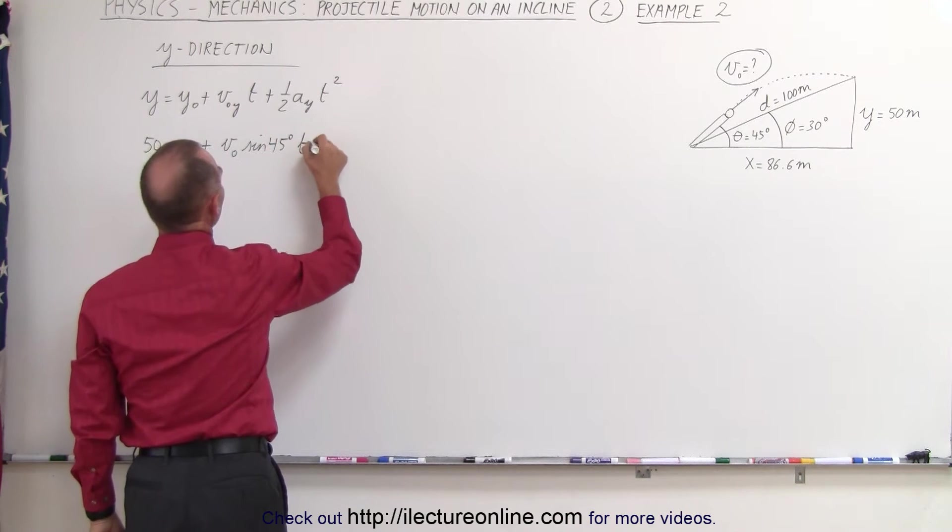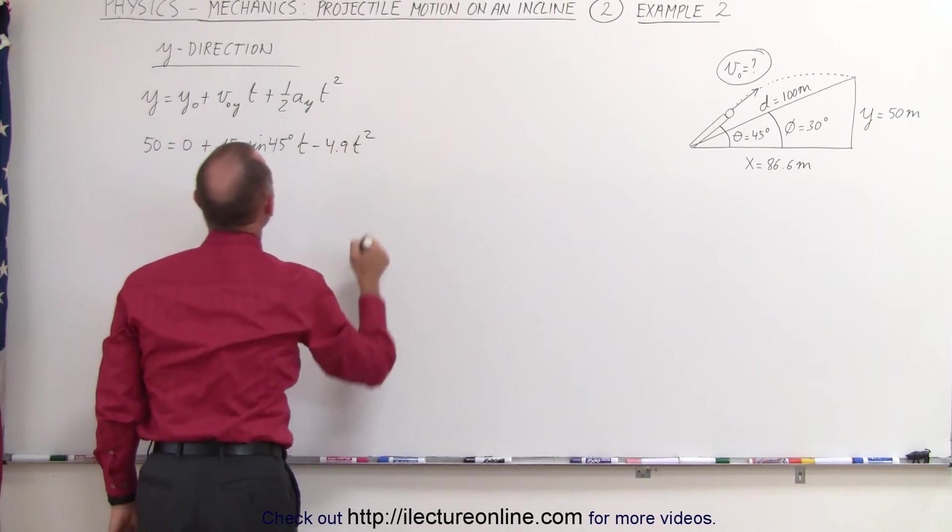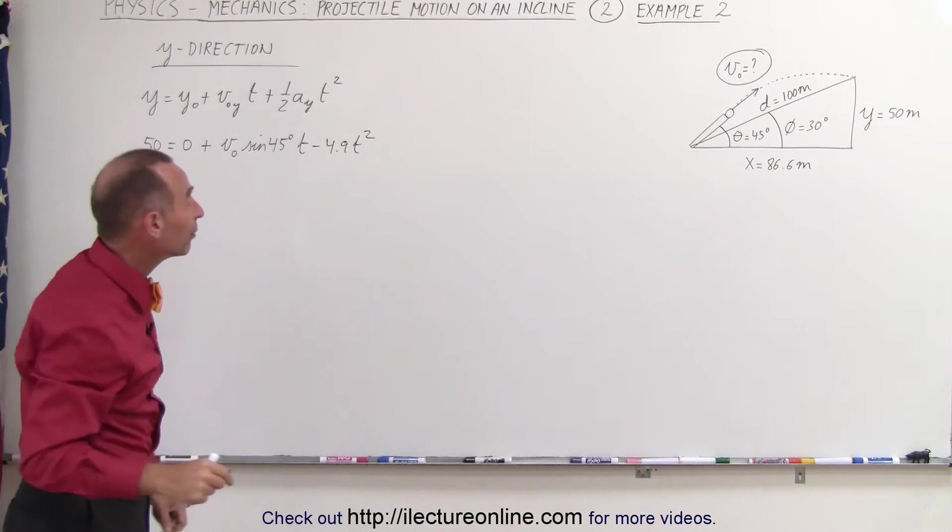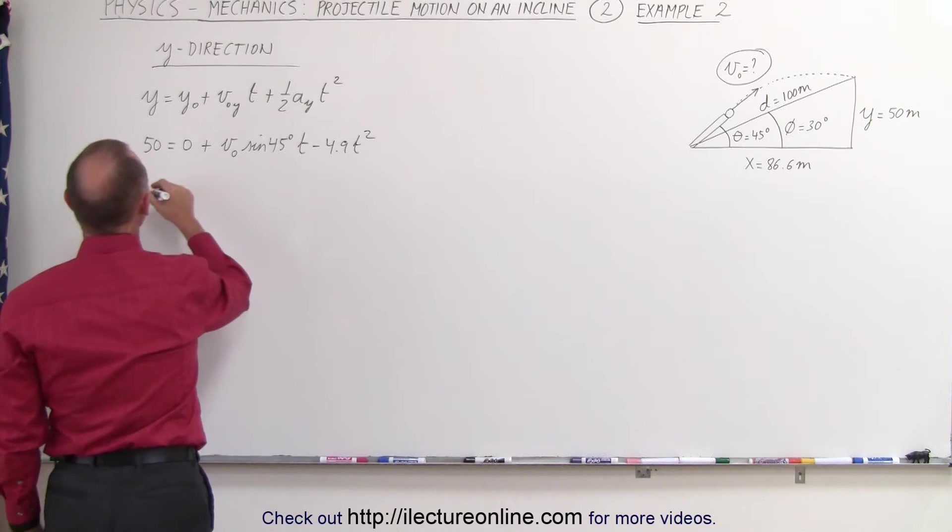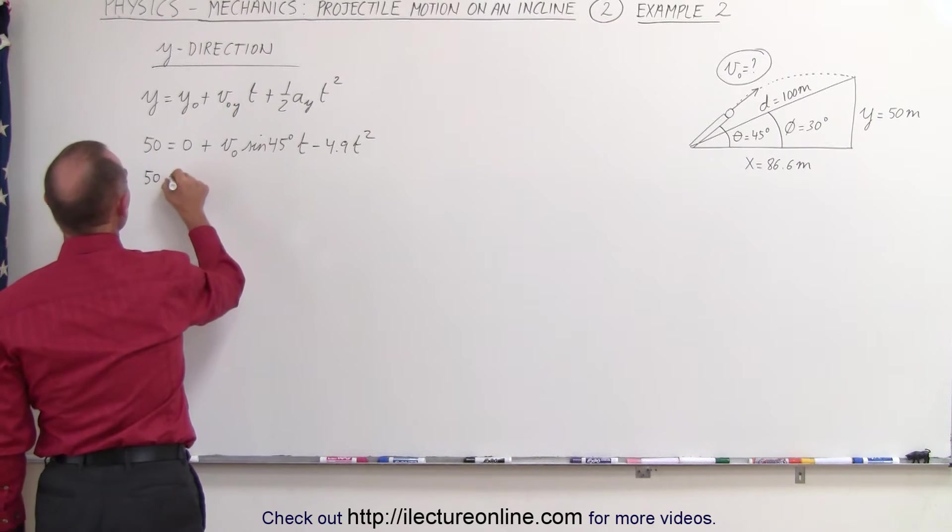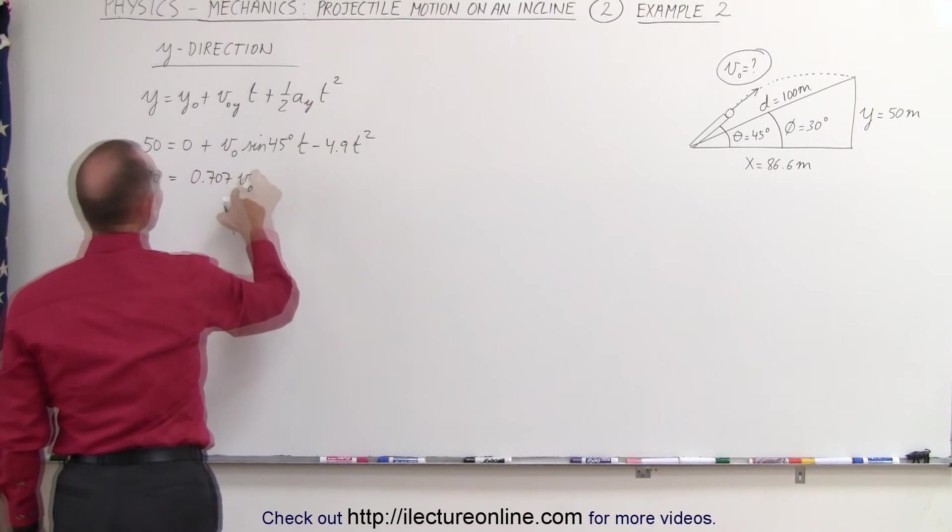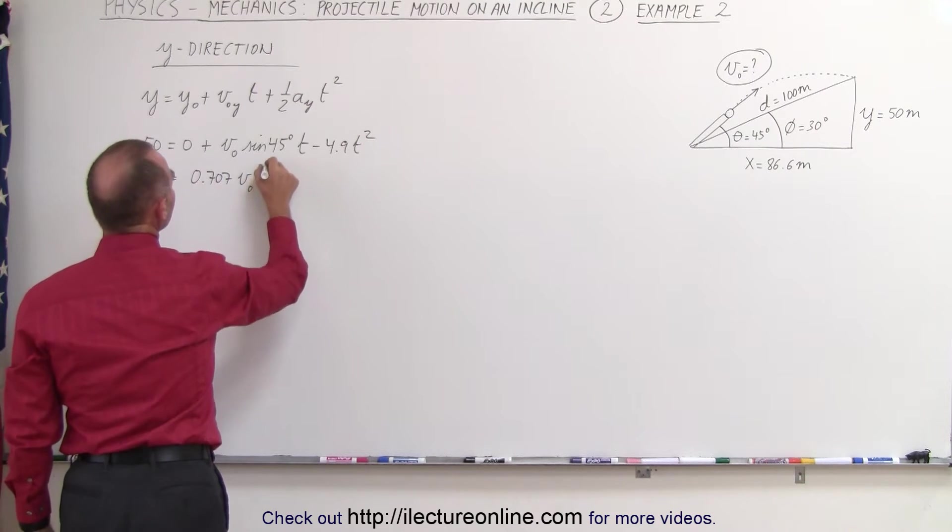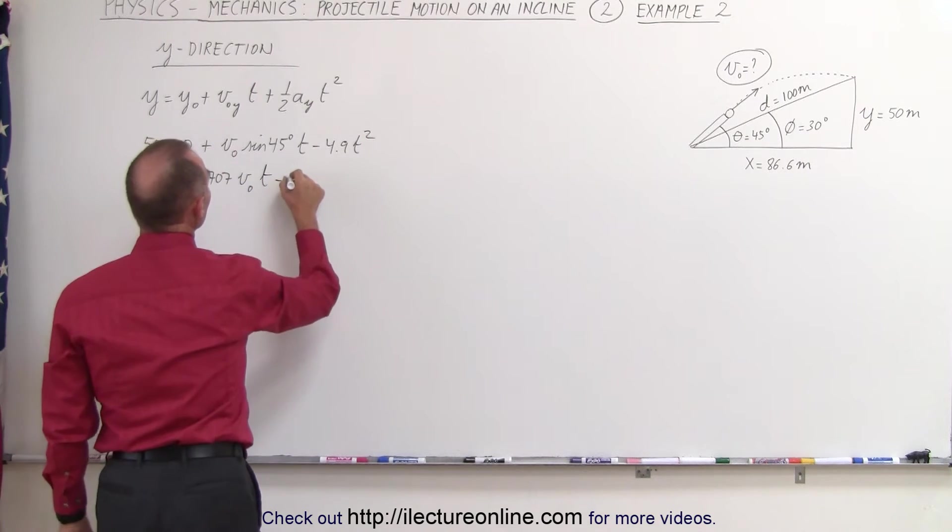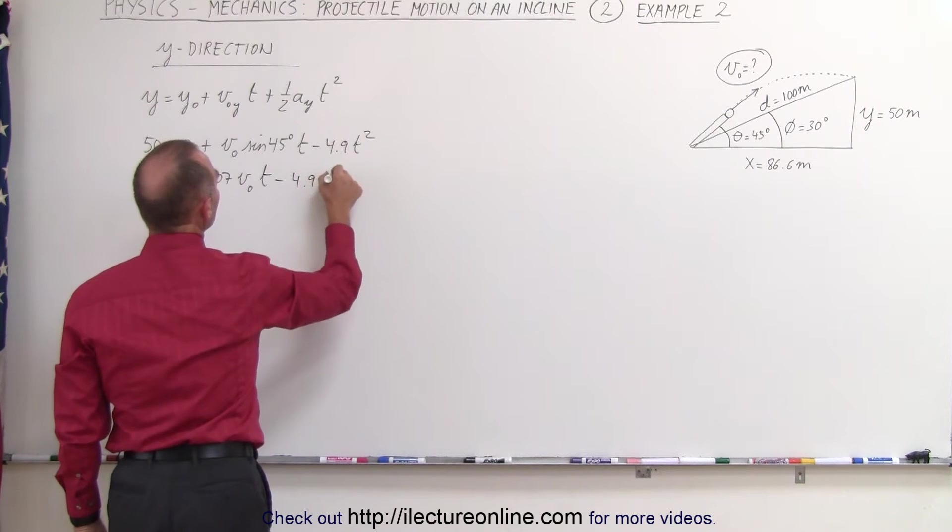Times time minus 4.9 t squared. Since we know what the sine of 45 degrees is, we can write this as 50 equals 0.707 v initial times time minus 4.9 t squared.